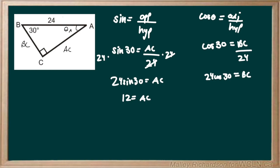Putting this in our calculator, we get our side length of BC to be 20.78.